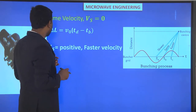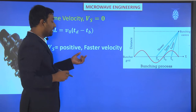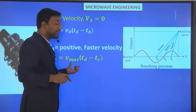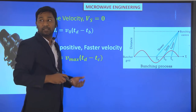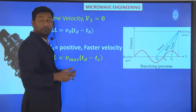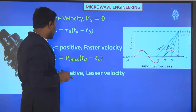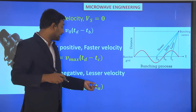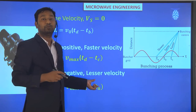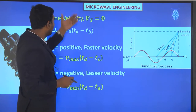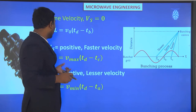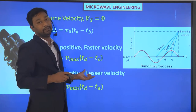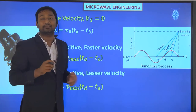Similarly, for positive or faster velocity: ΔL equals Vmax times (Td minus Tc). And for lesser velocity: ΔL equals Vmin times (Td minus Tb). So three conditions arise — one for same velocity, one for positive velocity, and one for negative or lesser velocity.